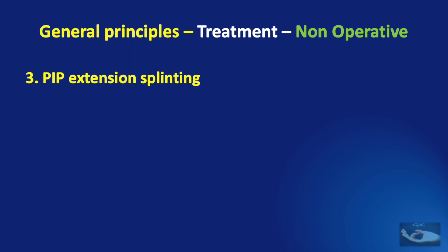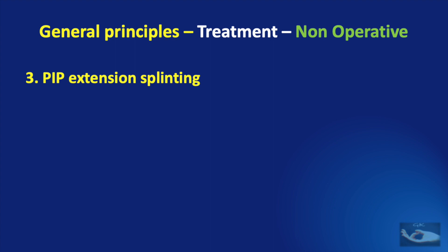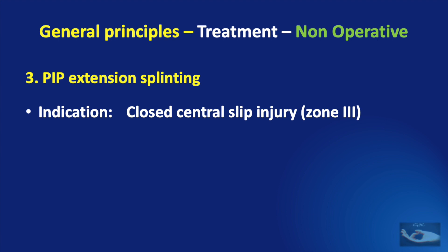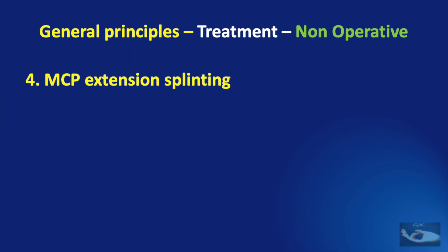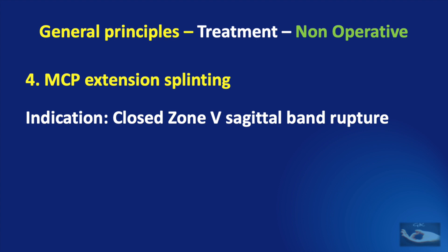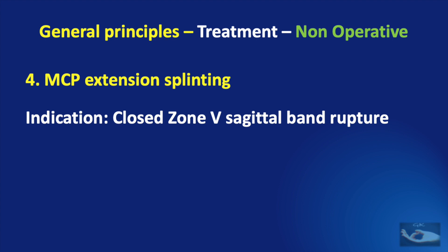It is also important to maintain proximal interphalangeal joint motion with the splint in place to protect the distal interphalangeal joint. PIP joint extension splinting is indicated for closed central slip injury in zone 3, also involving full-time splinting for 6 weeks with part-time splinting for 4 weeks. The DIP joint flexion must be maintained while this boutonniere splint is in place. The metacarpophalangeal joint extension splinting has a single indication — a closed zone 5 sagittal band rupture — and involves full-time splinting for 4 to 6 weeks.